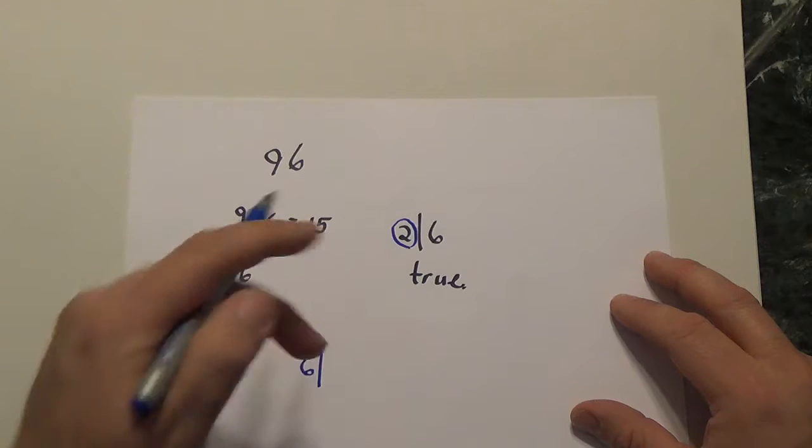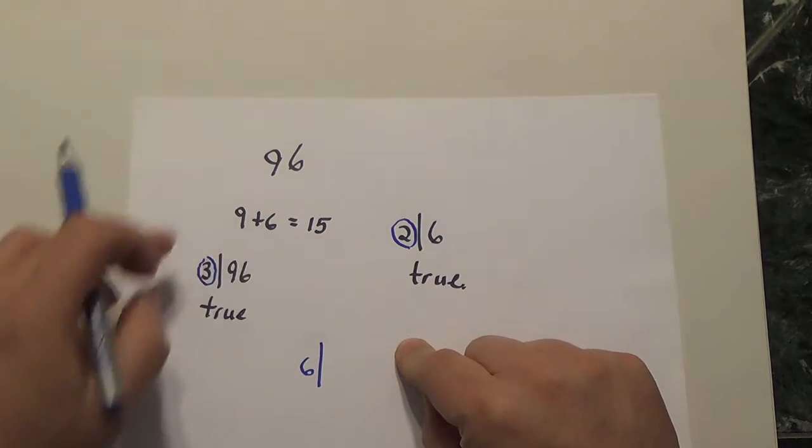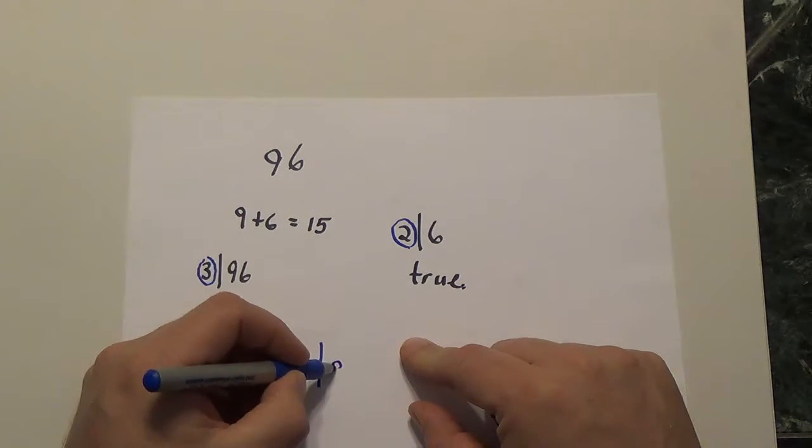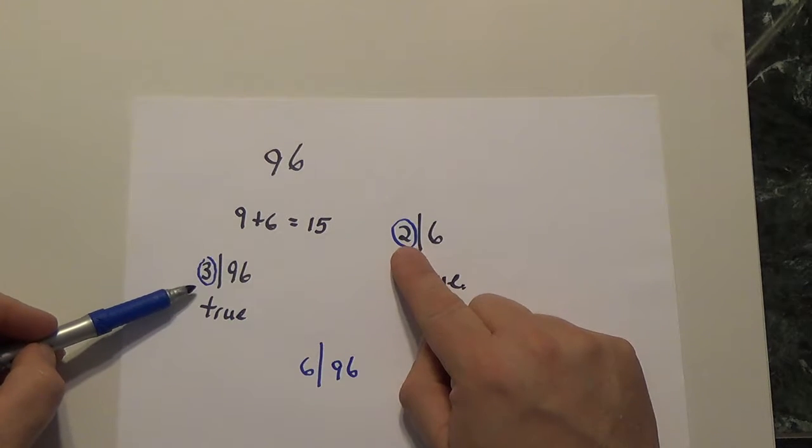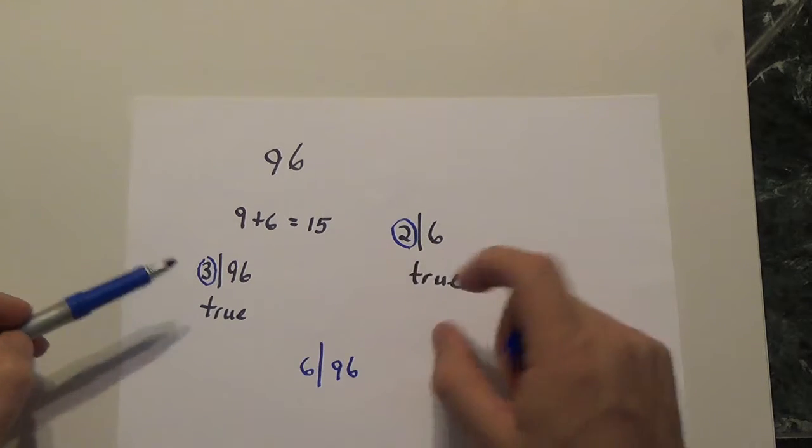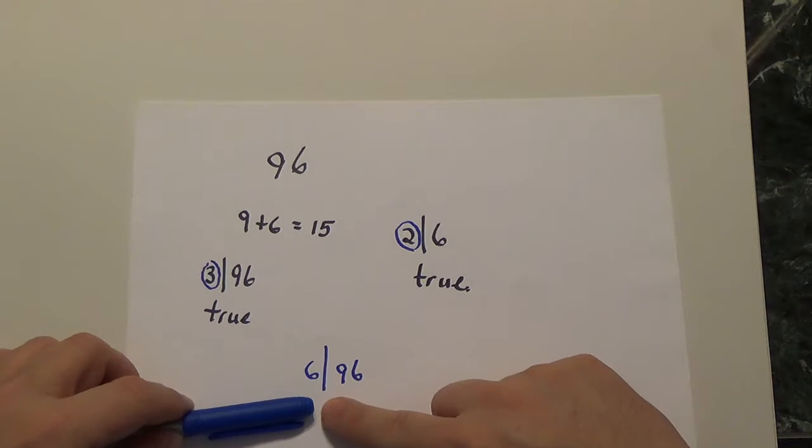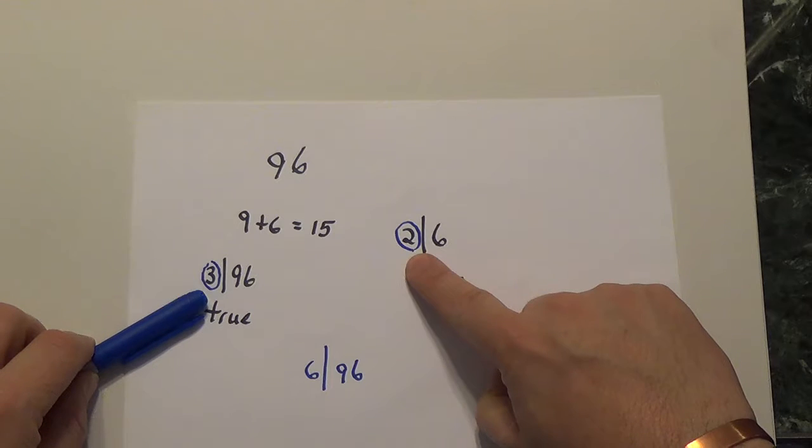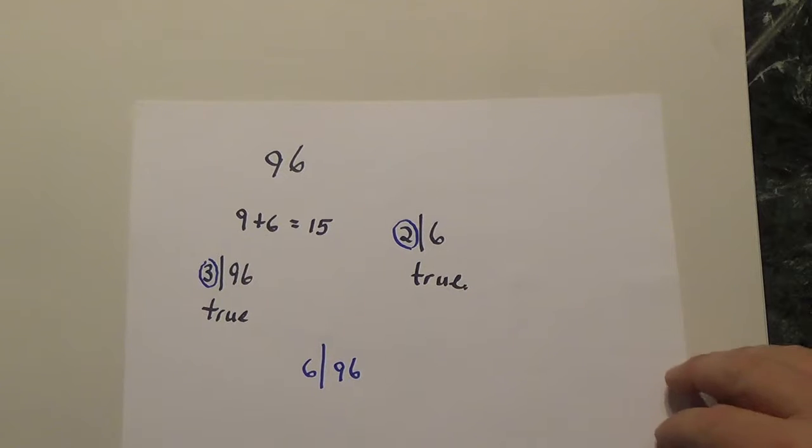Since all of the prime factors in 6, when separated, divided 96, I know that 6 will divide 96. What makes this interesting is we know that 2 and 3 are both prime numbers, but as a pair of numbers, they are relatively prime. Knowing that I can find divisibility by 6 by breaking 6 into two numbers that are relatively prime to one another means that I should be able to do this for other numbers.